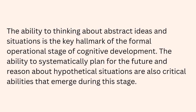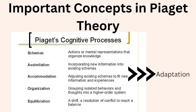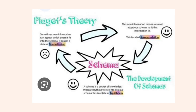The important concepts in Piaget's theory are schema, adaptation, organization, and equilibration. Schema is the mental representation of an object. Assimilation means to incorporate new information into an existing schema. Accommodation means to adjust a schema with new information. Organization means to organize meaningful information, and equilibration means to maintain a balance in adaptation.